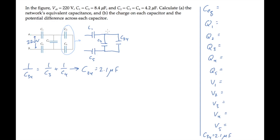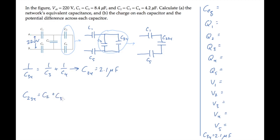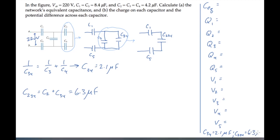Next we can notice that these two capacitors, C2 and C34, are connected in parallel, so we can replace them with an equivalent capacitor. I'll call that C234 and draw it here, with the other capacitors — now just C1 and C5 — left unchanged. Because C2 and C34 are in parallel, we find their equivalent capacitance by simply adding them, and that gives us 6.3 microfarads.